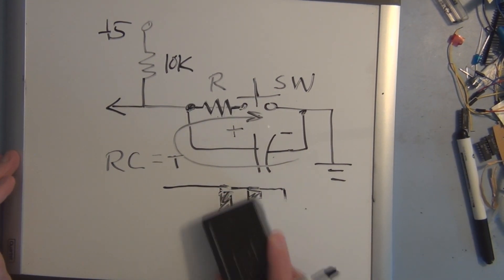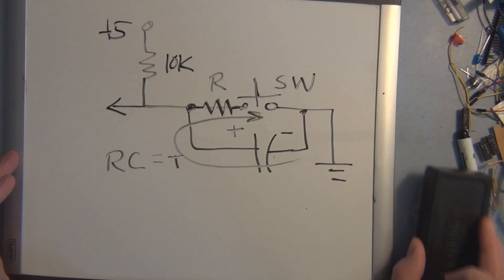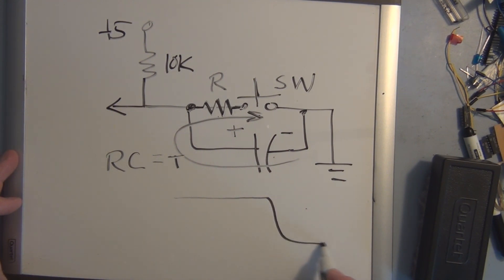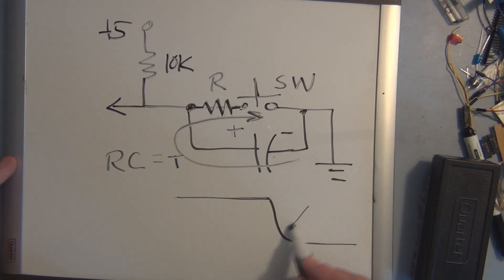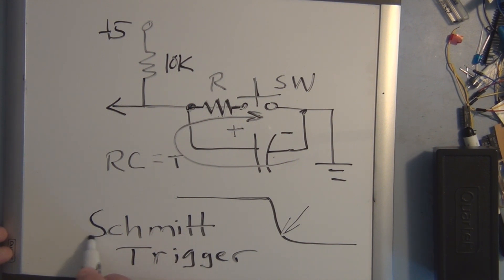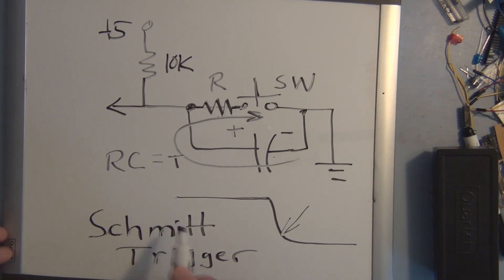With the capacitor and resistor in place, you wouldn't even see those little glitches. The only concern now is to somehow sharpen up that edge, which is related to a Schmitt trigger. It has a trigger threshold where it'll switch high once you surpass a certain threshold voltage, or switch low after passing another threshold voltage — it has two threshold voltages.